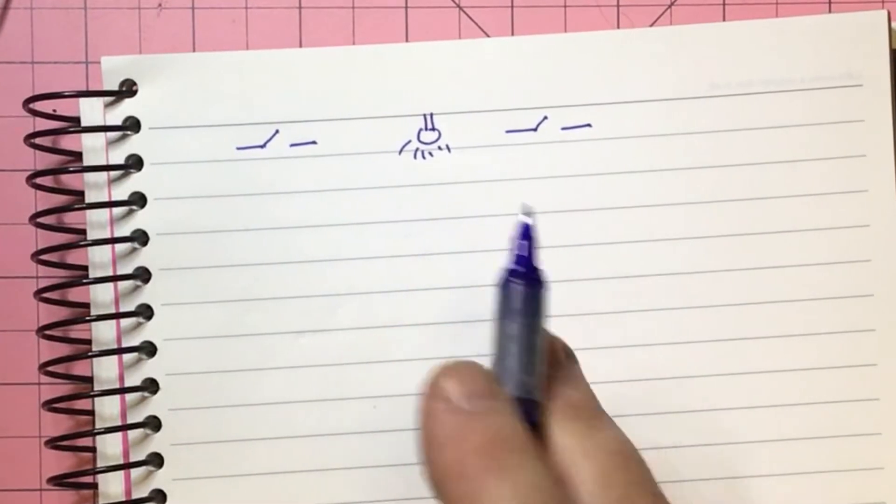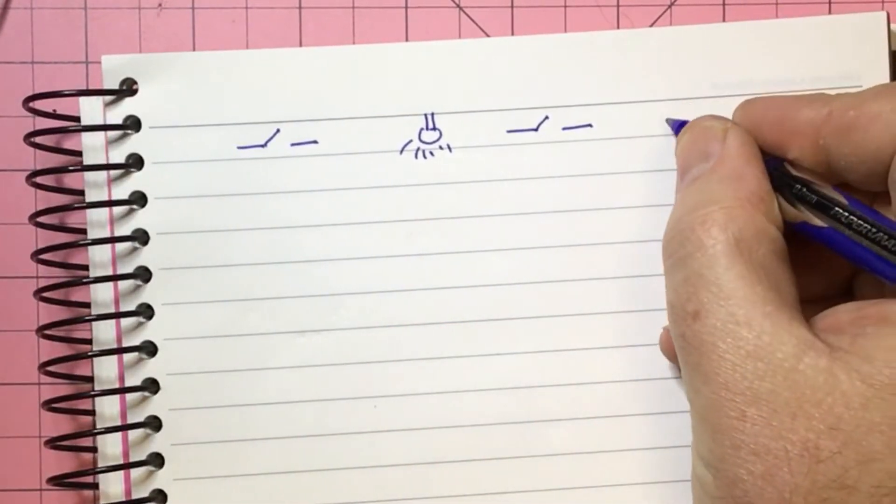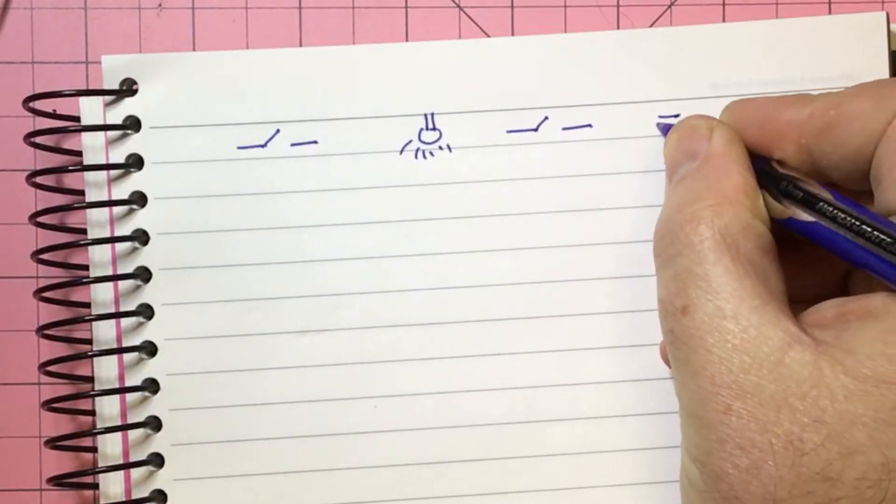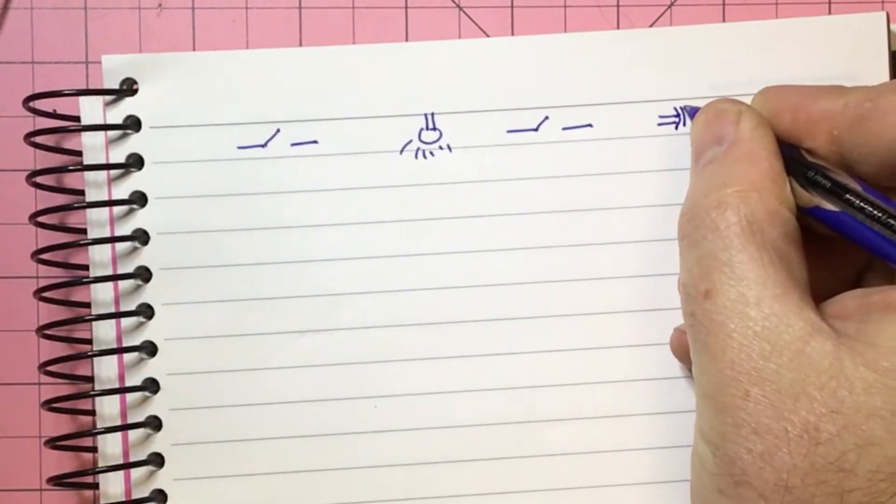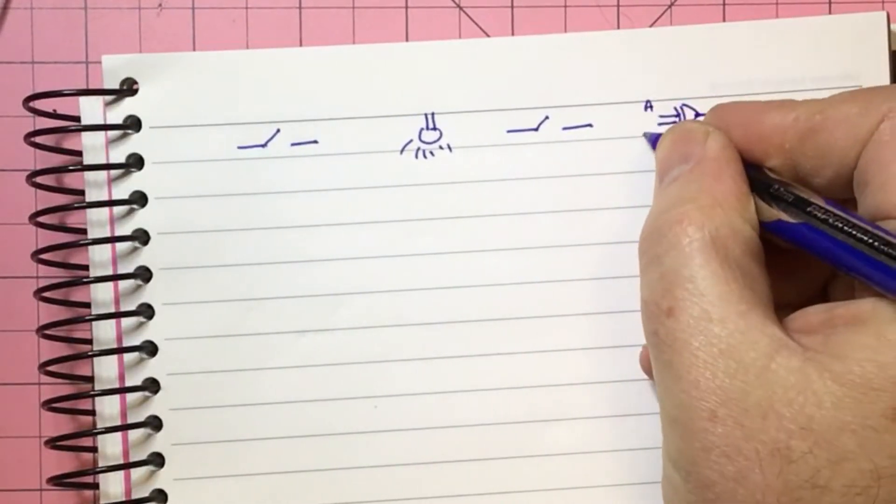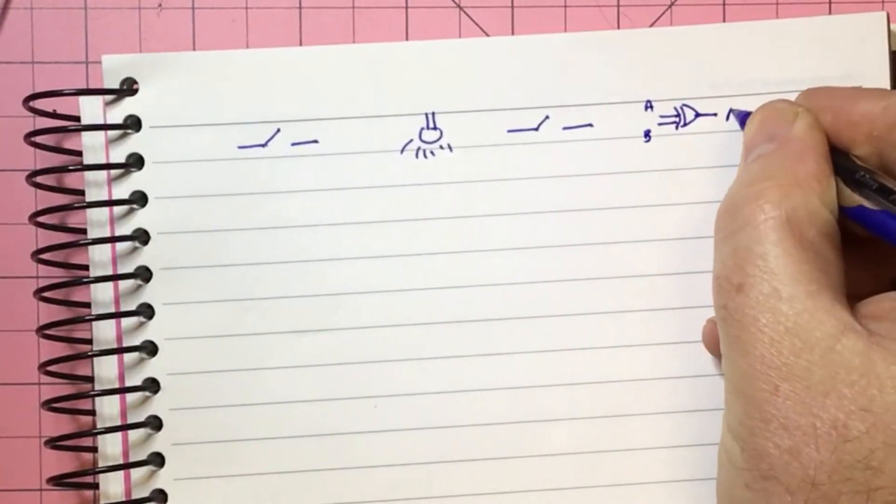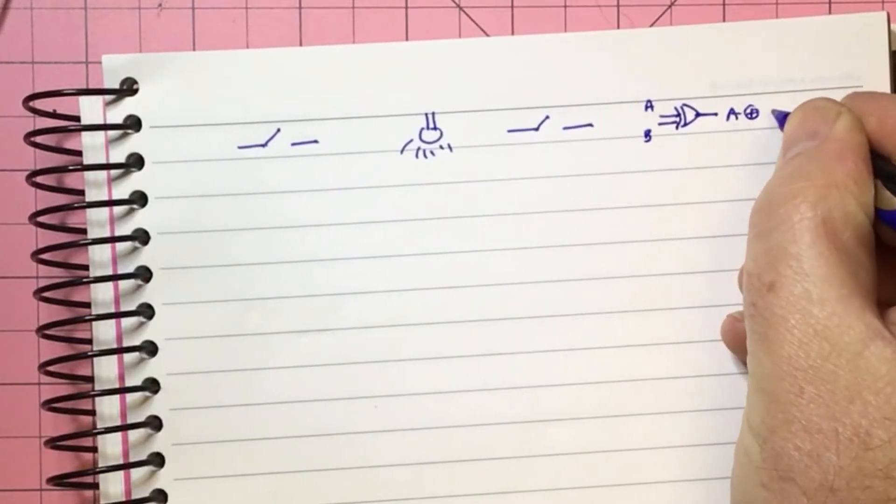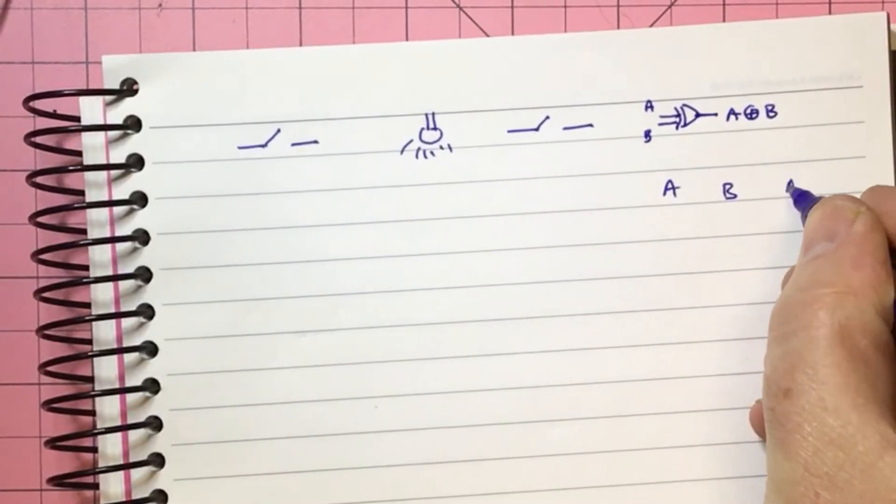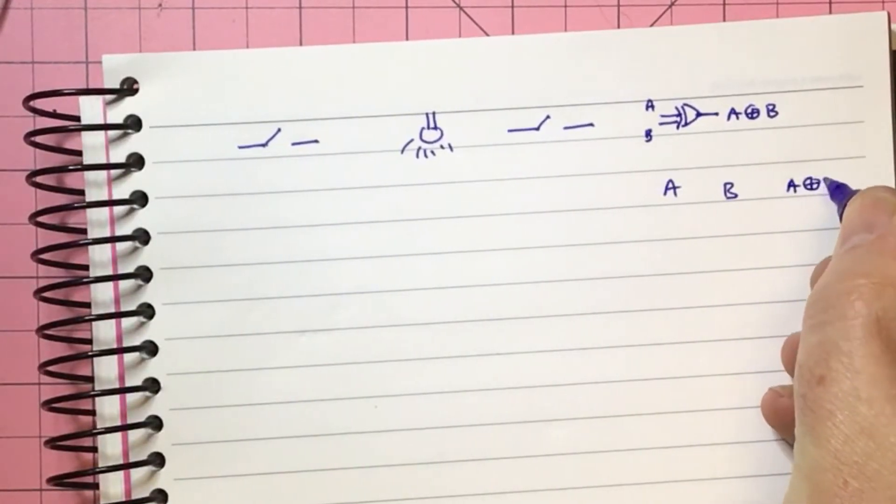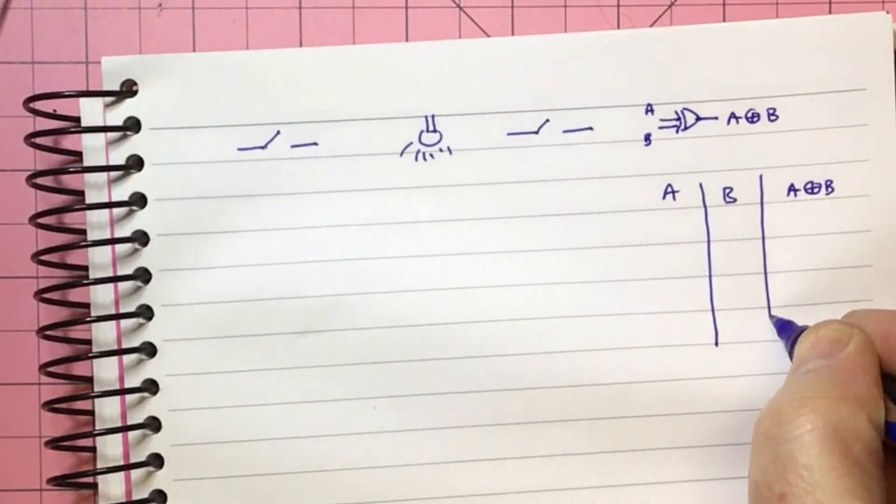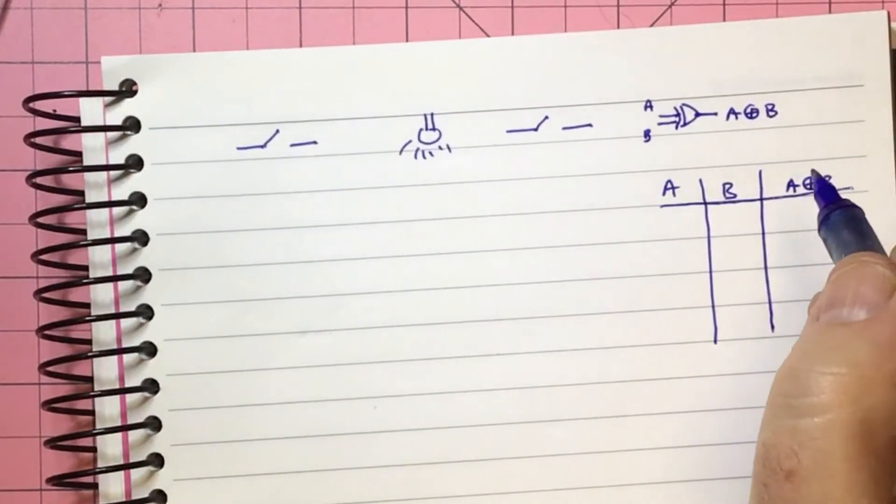So there's lots of different ways of doing this but I thought we might use an XOR gate. So an XOR gate looks something like this and we've got an A and a B and then we've got an A XOR B.